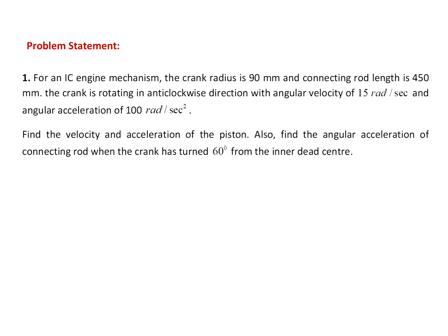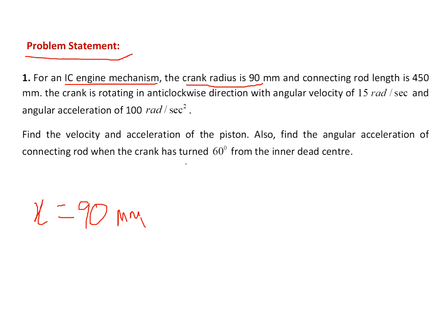Let's look into the problem statement. For an IC engine mechanism, that is a slider crank mechanism, the crank radius is 90 mm — I'll call that x, so x equals 90 mm. The connecting rod length, which I'll call L, is given as 450 mm. The crank is rotating in the anti-clockwise direction with an angular velocity of 15 radian per second.